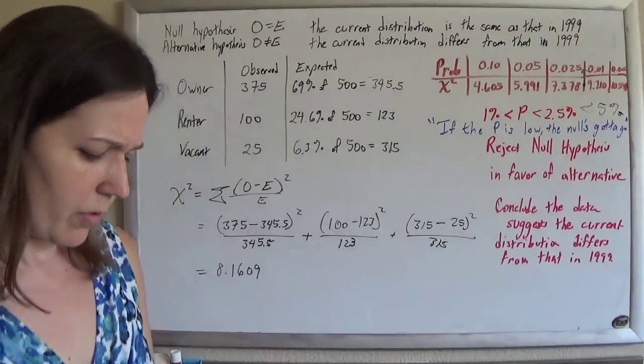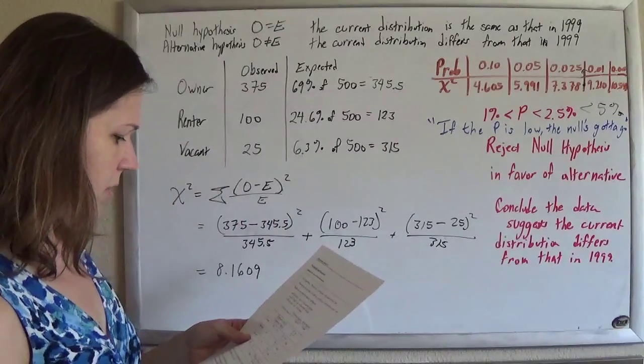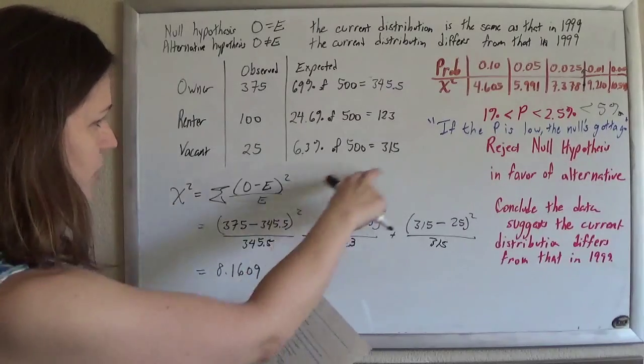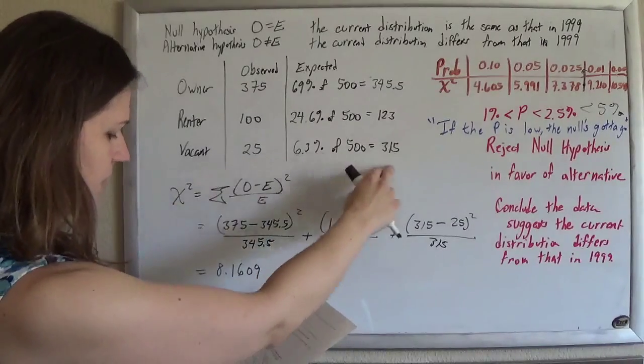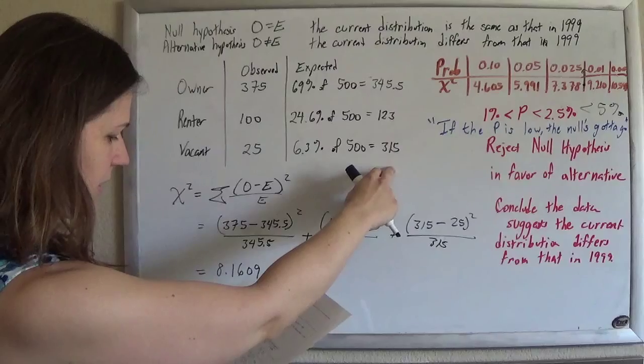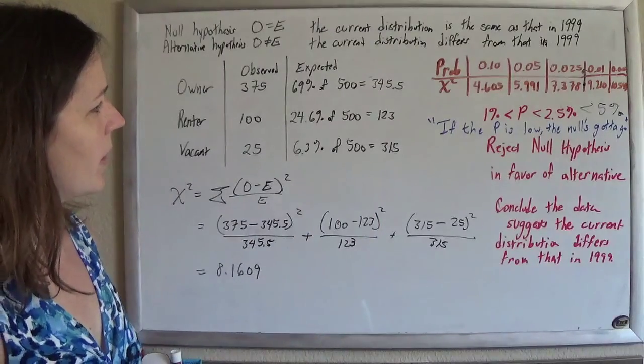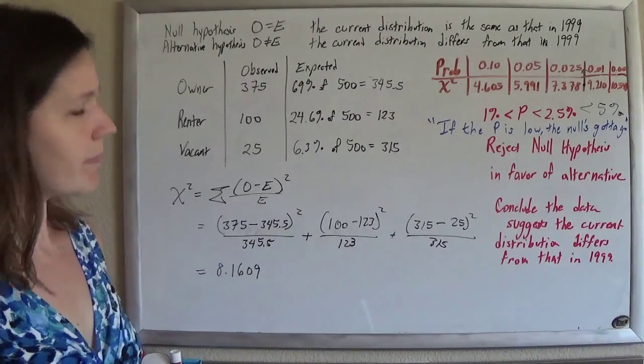I'm going to check that number real fast because that seemed, you know. Yeah, it looks okay. That's so much different, right? 25 versus 315, that's a little nuts. But, yep, that's how that works. Alright.